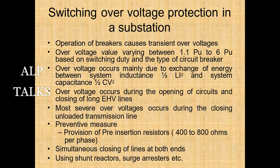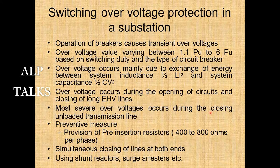Switching overvoltage protection: operation of breakers causes transient overvoltages varying between 1.1 and 6 times the normal voltage depending on switching duty and circuit breaker type. Overvoltage occurs mainly due to exchange of energy between system inductance (LI²) and system capacitance (CV²). Overvoltages occur during opening of circuits and closing of long EHV lines. Most severe overvoltages occur during closing of unloaded transmission lines. Preventive measures include provision of pre-insertion resistors of 400–800 ohms per phase, simultaneous closing of lines at both ends, and use of shunt reactors and surge arresters.